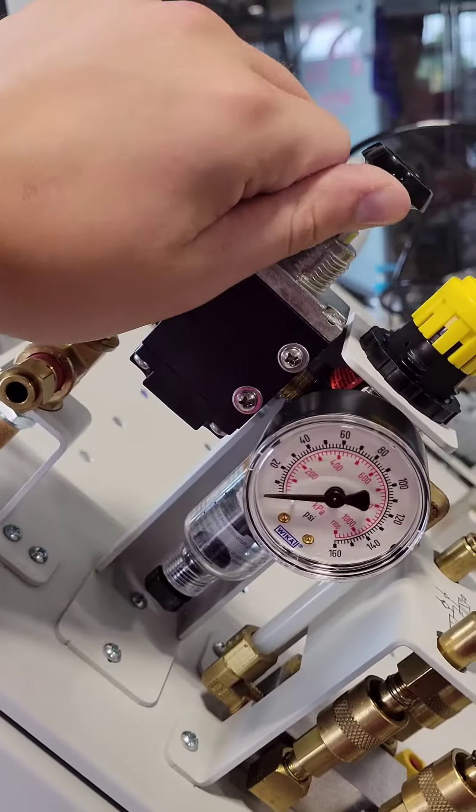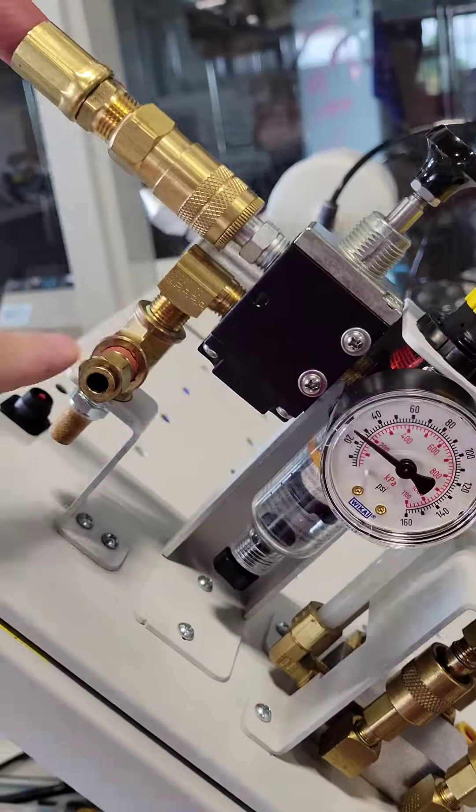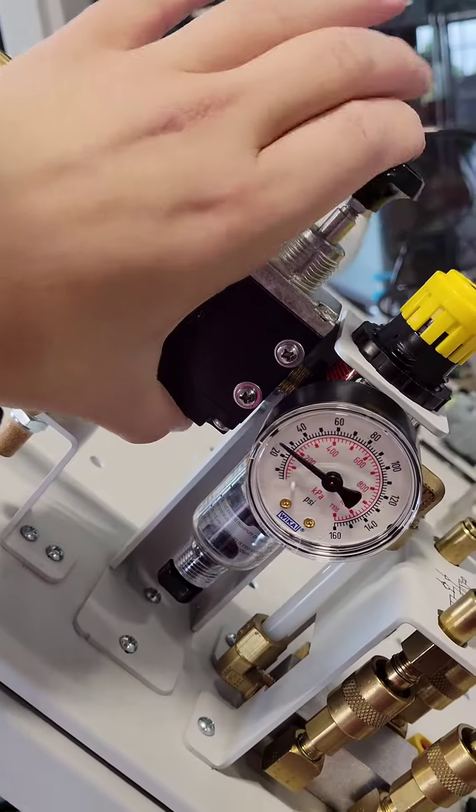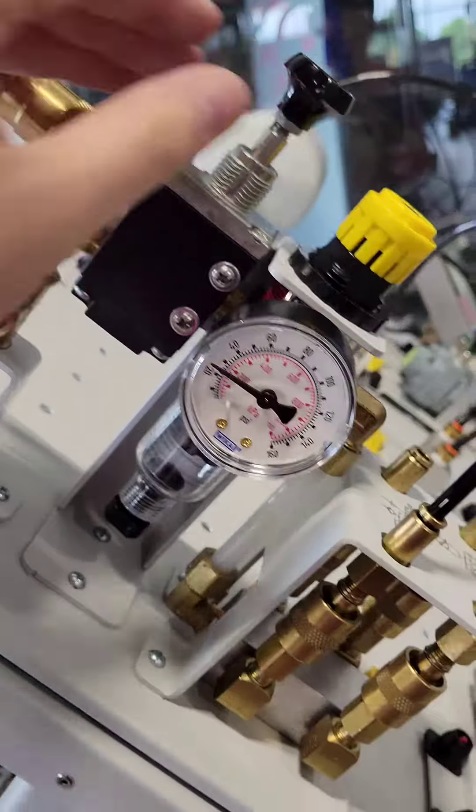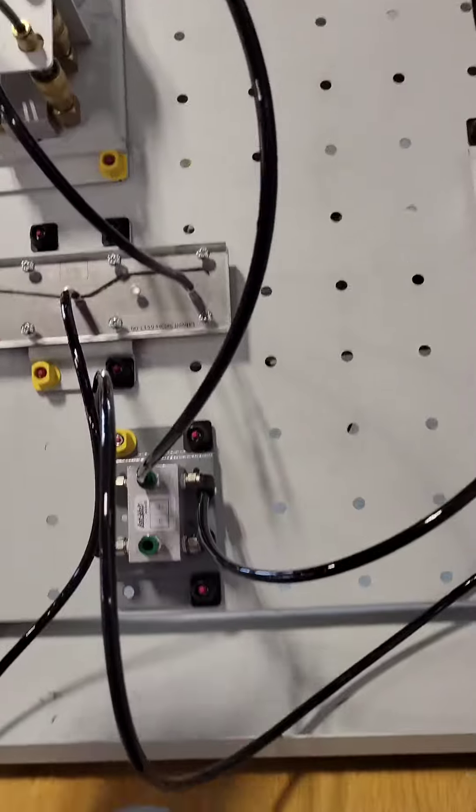To start, we're going to energize the system using the flow control valve on top. On the backside, there is a muffler for when we want to de-energize and blow off extra gas. Through the manifold, there's a gate